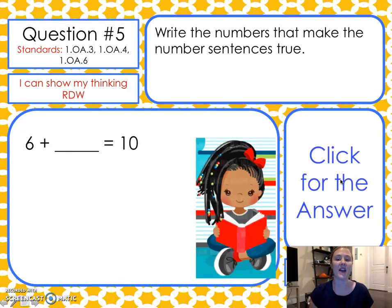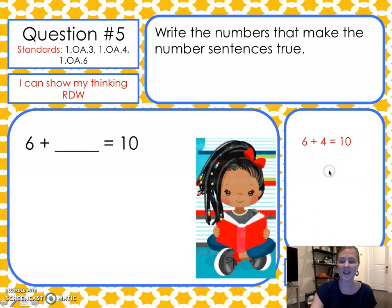Question number five. Write the number sentences that make the number sentences true. Six and make ten. You won't need to pause. We know this automatically. Six and four make ten. Good job.